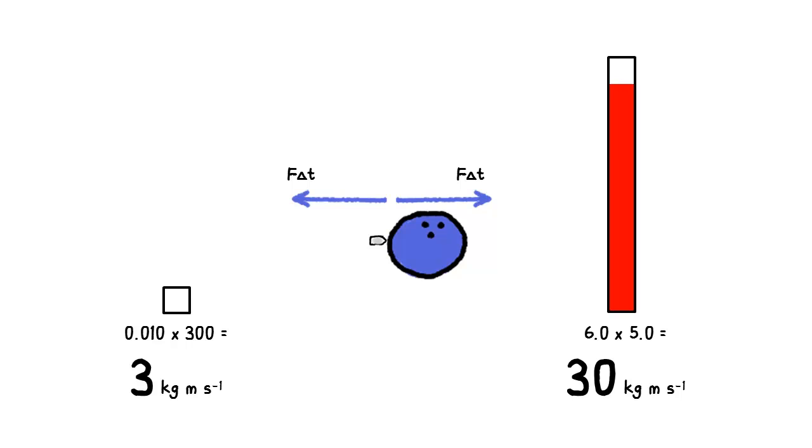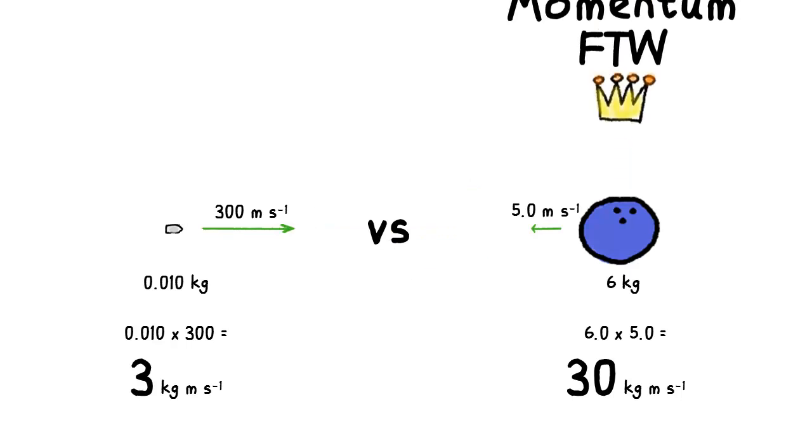So the one with the smaller initial momentum always comes to rest first and turns around first. The bowling ball wins! Hooray!